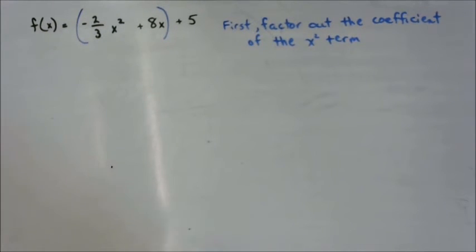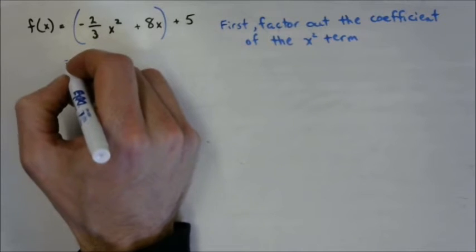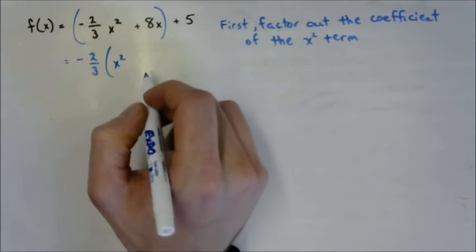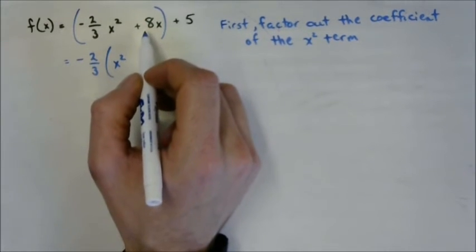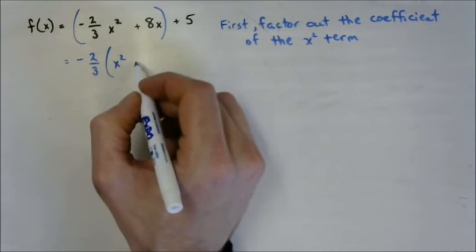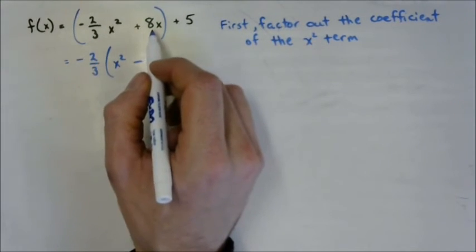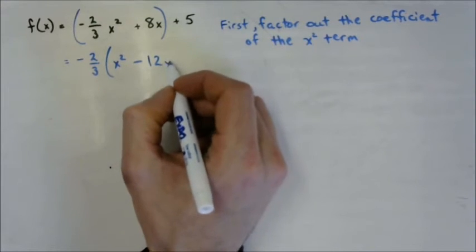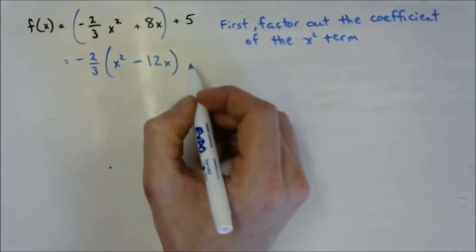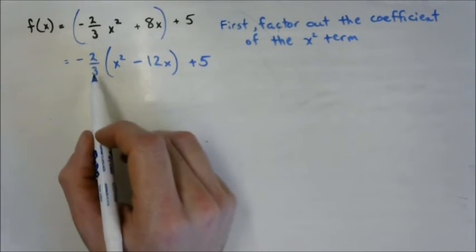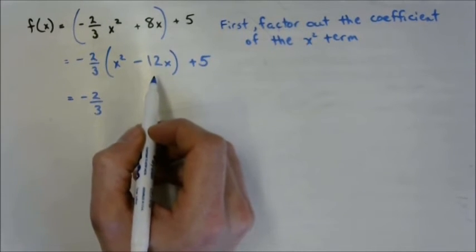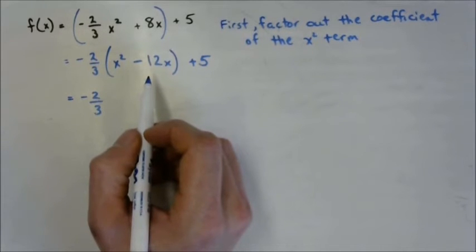When we group our terms with x, we need to first factor out the coefficient of the x squared term. Factor out negative 2 thirds: factoring out of the first term leaves x squared; factoring out of the 8x term — 8 divided by negative 2 thirds equals 8 times 3 over 2, so 8 times 3 is 24 divided by 2 is 12, with a negative sign — gives negative 12x. This will allow us to complete the square and end up with a perfect square trinomial that we can convert into a binomial squared.